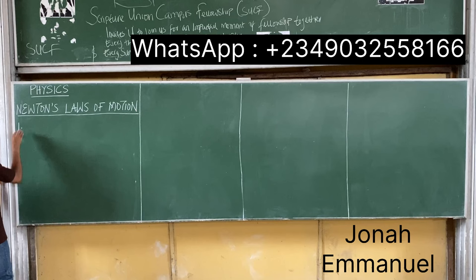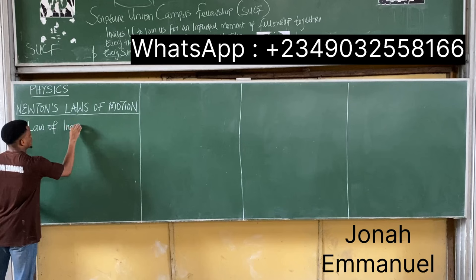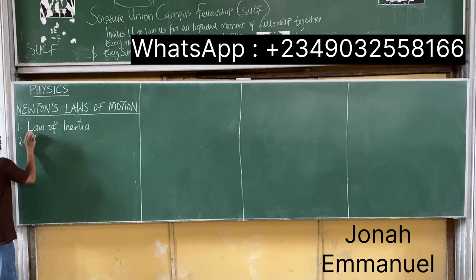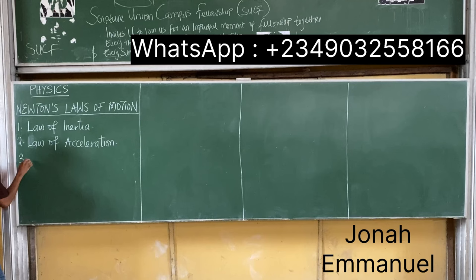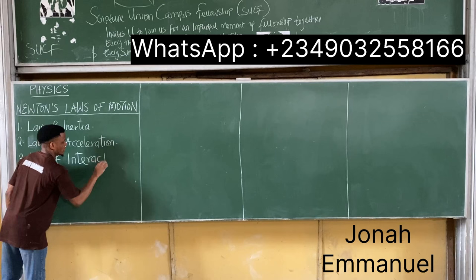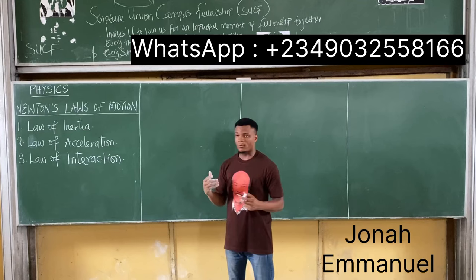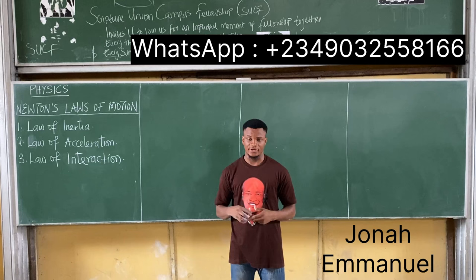There are three laws under this. The first one is called the Law of Inertia. Newton's second law is called the Law of Acceleration, and Newton's third law is called the Law of Interaction. So the three laws are: number one, the Law of Inertia; number two, the Law of Acceleration; number three, the Law of Interaction.